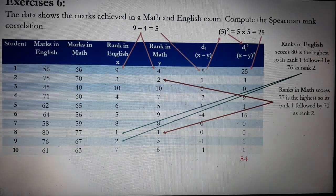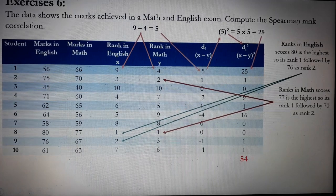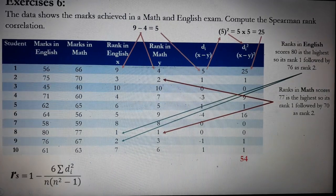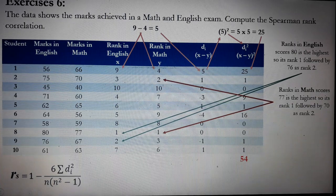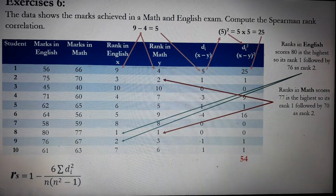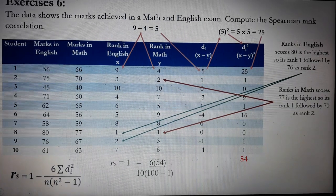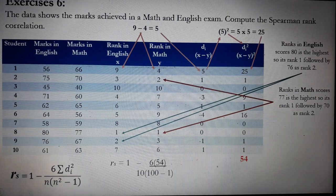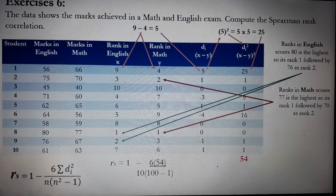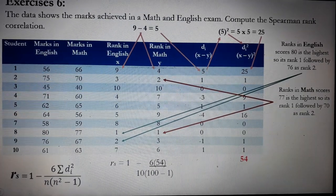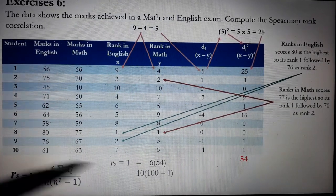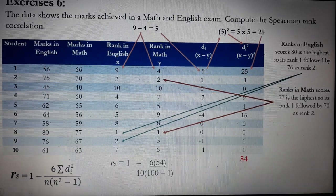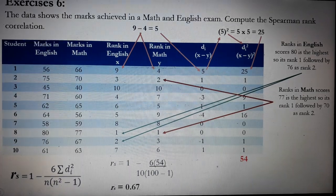And we can now solve for the Spearman-Rank correlation coefficient. So it is equal to, by substitution, 1 minus 6. Where do we get the 6? That's the constant. Times 54 divided by 10 times 100. Where did I get the 100? It's 10 times 10 minus 1. And by calculation, it's 0.67.